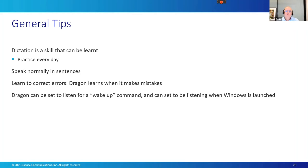Speak normally in sentences — try to speak like a newsreader, accentuating your diction so Dragon can understand you easily. Learn to correct errors: Dragon is personal, so if you correct it when it makes a mistake, it will get better over time. You can also train it on your documents — Dragon Professional will process all your Word documents and outgoing emails to learn how you speak, what words you use, and what words you use together. This can improve Dragon's accuracy for you. If someone hasn't got use of their hands, Dragon can be set to recognize a wake-up command — you say 'wake up' and it activates — or you can have Dragon set to come on active when Windows starts.